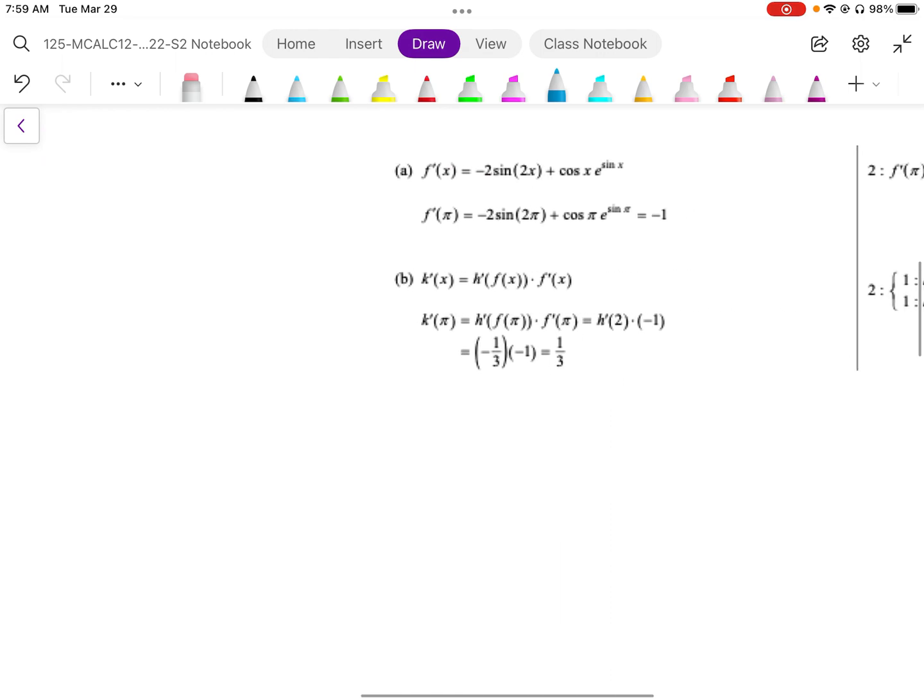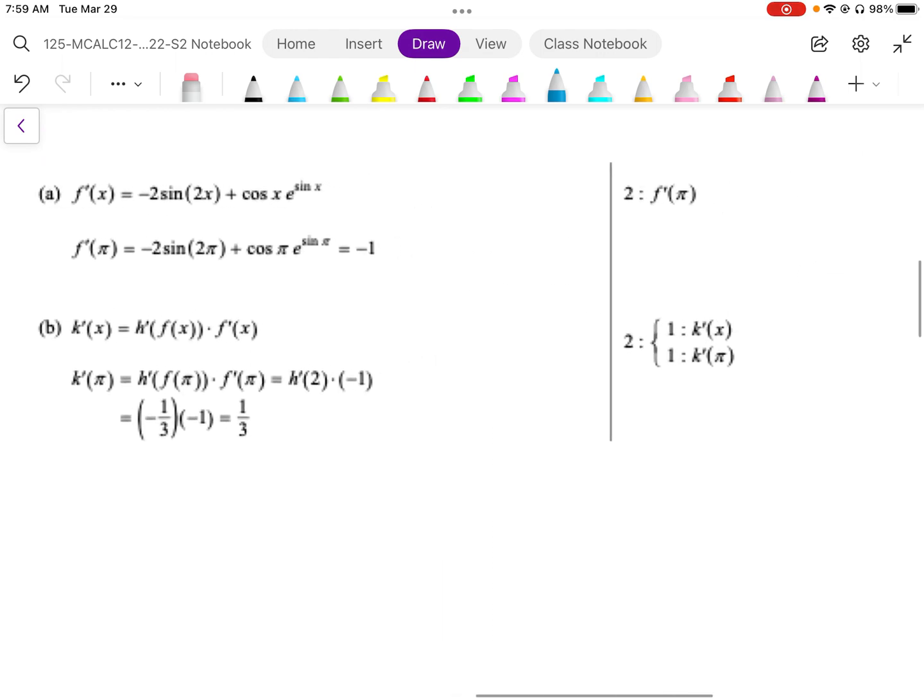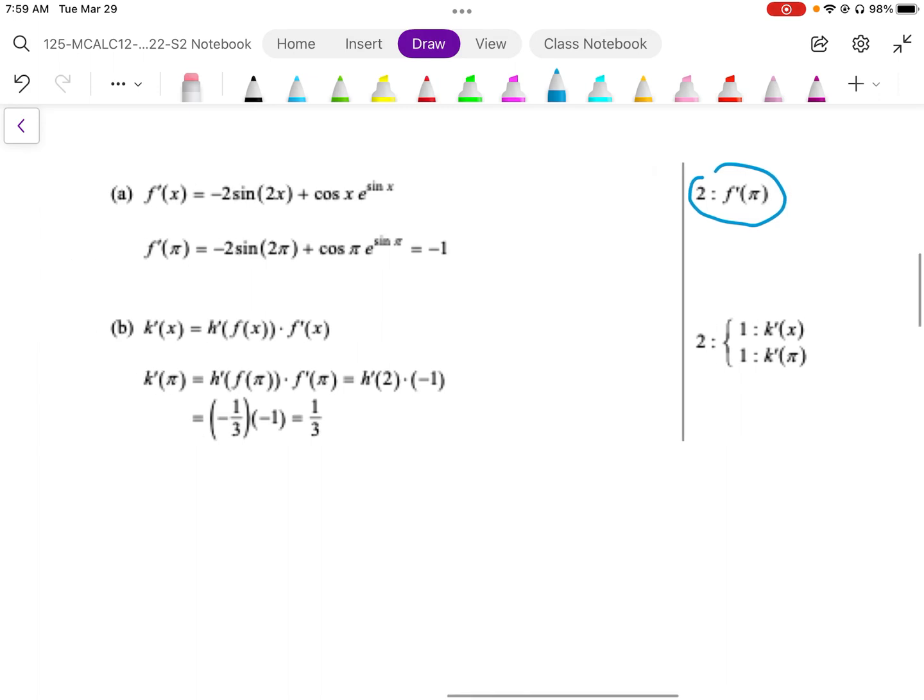So then looking at the mark scheme here, where the marks are going to be given, there's basically two marks going to be given for calculating the value of f prime at pi, which we calculate to be negative 1. And then for part b, one mark is going to be given for determining this expression here, essentially differentiating the notation. And then the other mark is going to be given for the actual value calculated of 1 third.